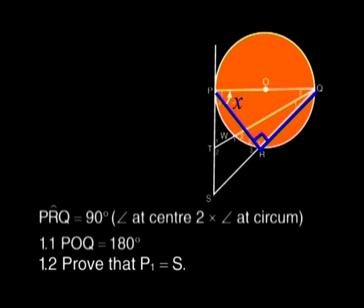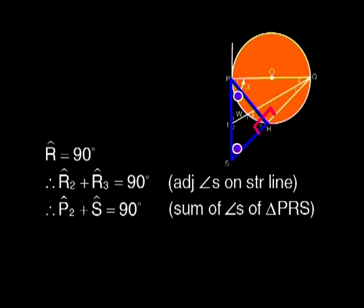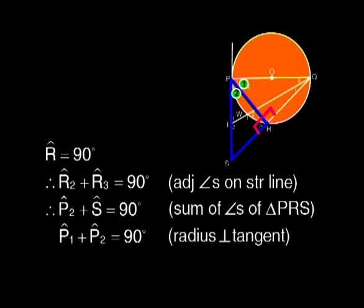To prove question 1.2, we will probably use angle X and the 90 degree angle at PRQ. Look at angle S — it's part of triangle PRS. If R1 is 90 degrees, then R2 plus R3 is also 90 degrees. These are adjacent angles on a straight line. In triangle PRS, the leftover angles also equal 90 degrees, because the sum of the angles of a triangle is 180 degrees. So P2 plus S is 90 degrees. P1 plus P2 also adds up to 90 degrees, because the radius is perpendicular to the tangent PS.